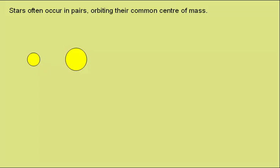To find the position of the common centre of mass, if we call one star mass m1 and the other mass m2, then the centre of mass will be on a line joining the two, and it will be closer to the larger mass, in this case m2.